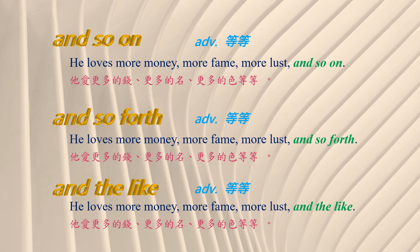它用逗点跟前面的全句加以分开，表示它修饰前面的全句。Two: 'and so forth.' Example: 'He loves more money, more fame, more lust, and so forth.' 他爱更多的钱，更多的名，更多的色，等等。Three: 'and the like.' Example: 'He loves more money, more fame, more lust, and the like.' 他爱更多的钱，更多的名，更多的色，等等。